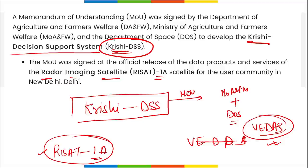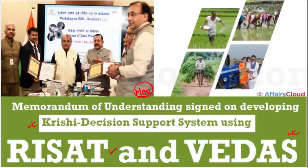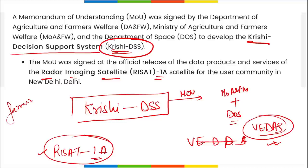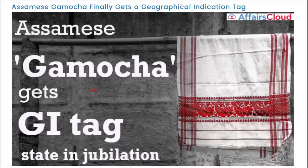RISAT stands for Radar Imaging Satellite 1A. These are all-weather satellites that can take high-resolution geospatial images regardless of lighting conditions and can penetrate deep into vegetation. RISAT and VEDAS will be used by the Krishi Decision Support System to help farmers through satellite imagery — 'Krishi' meaning agriculture in Hindi.